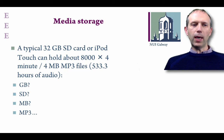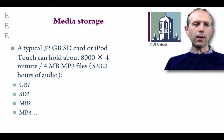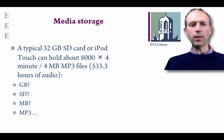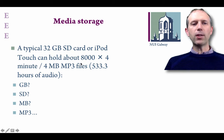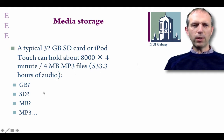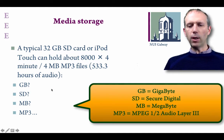Now, thinking back to your mobile phone and the type of storage you might have — it may be built in or some external SD card. Just to give an indication of these different terms: let's say we have an SD card that holds 32 gigabytes. That could potentially hold about 8,000 MP3 files which are four minutes long — over 500 hours of audio. So what do all these terms like GB, MB, MP3, and SD mean? MP3 is a compression format which can be used to compress audio. SD is a particular type of solid state storage device for many types of mobile and camera applications.